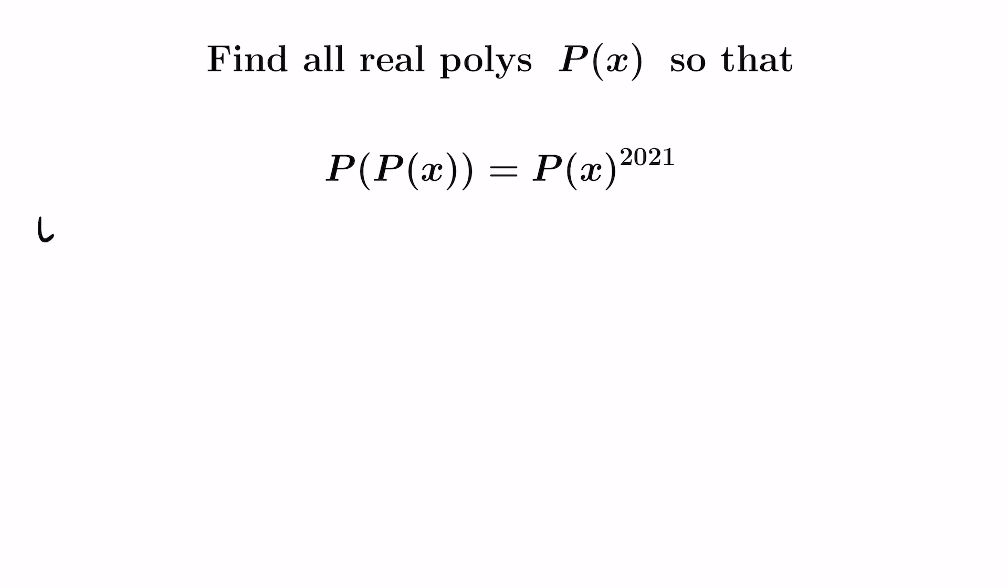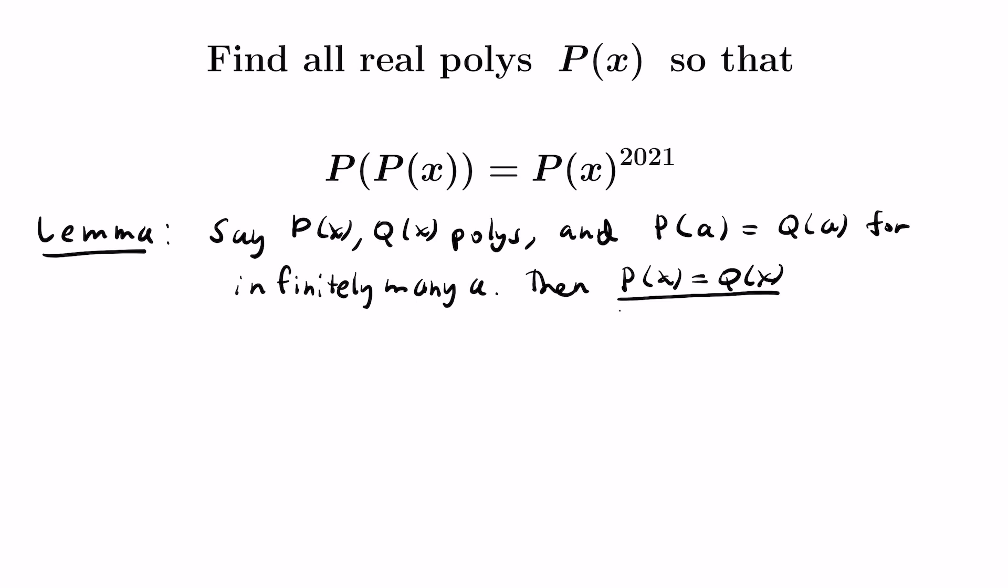To get us started, what I want to do is actually start with a lemma. And this lemma will allow us to learn something about polynomials in general. So say we had p of x and q of x polynomials, and we knew that they shared infinitely many values when infinitely many values are plugged in, meaning p of a is q of a for infinitely many a. It'll turn out then that a consequence of this is that the polynomials p of x and q of x are actually identically equal themselves.